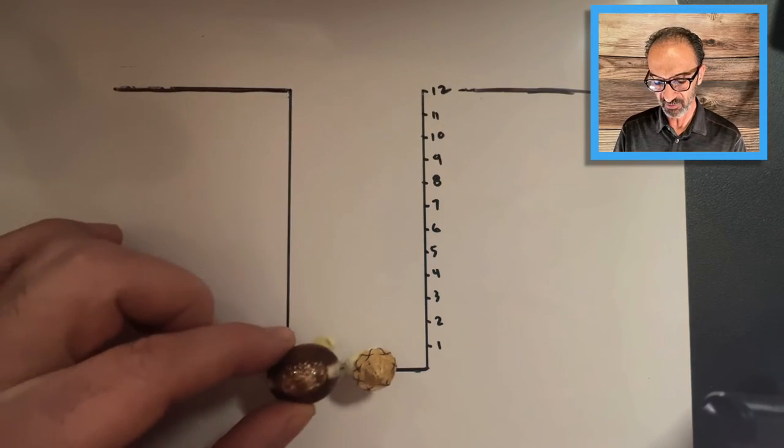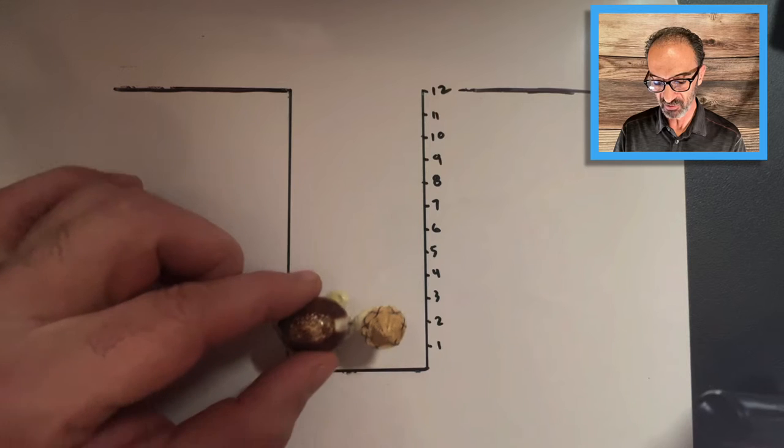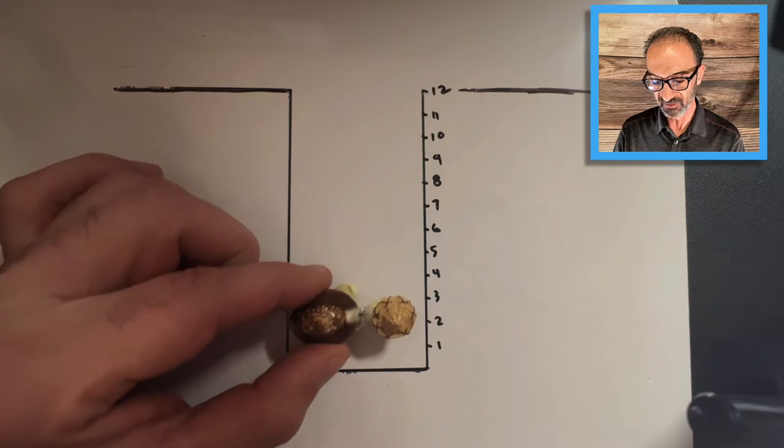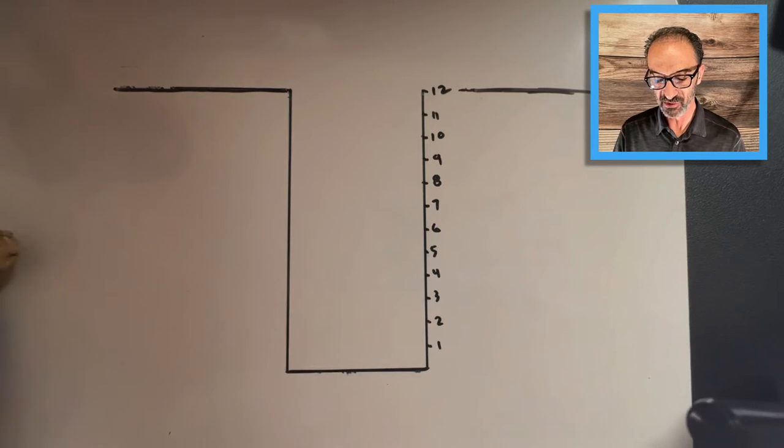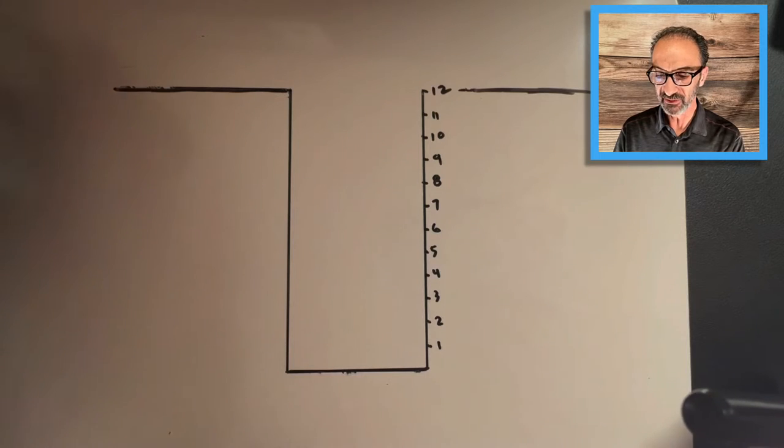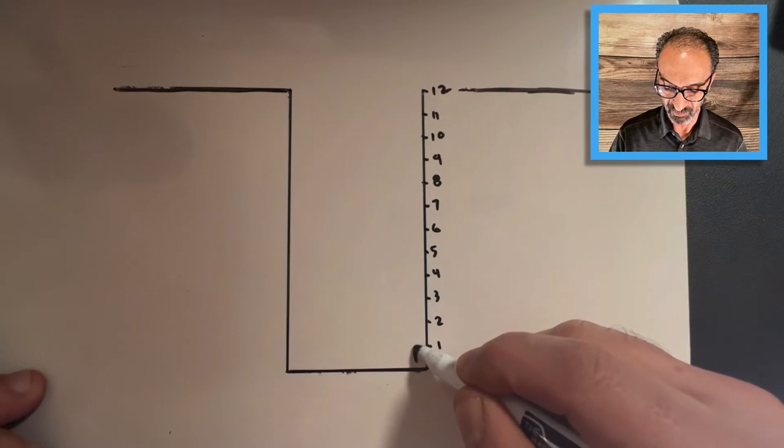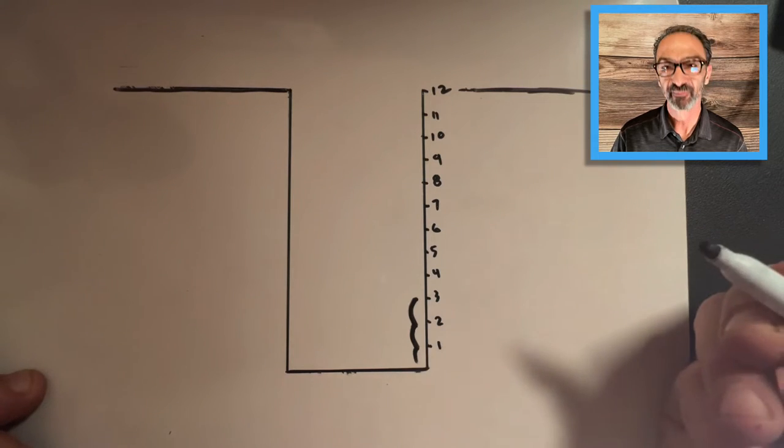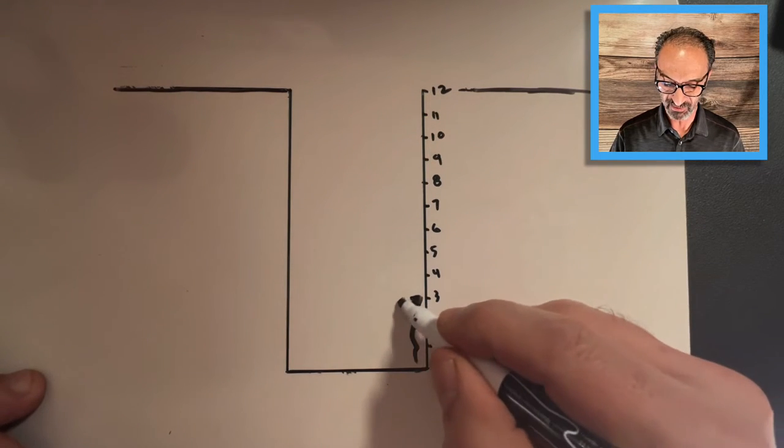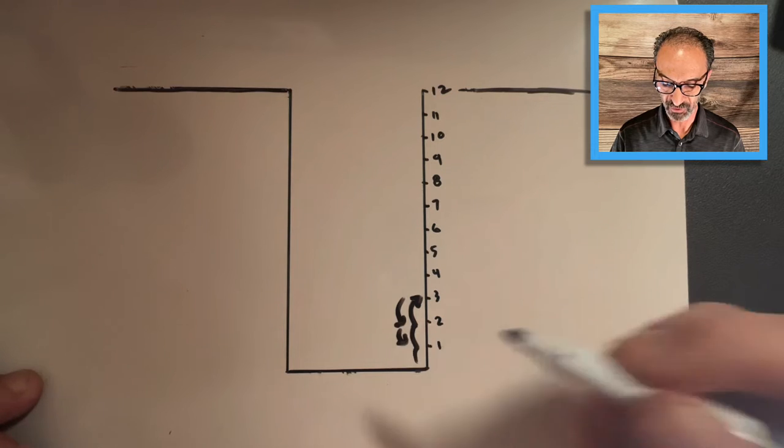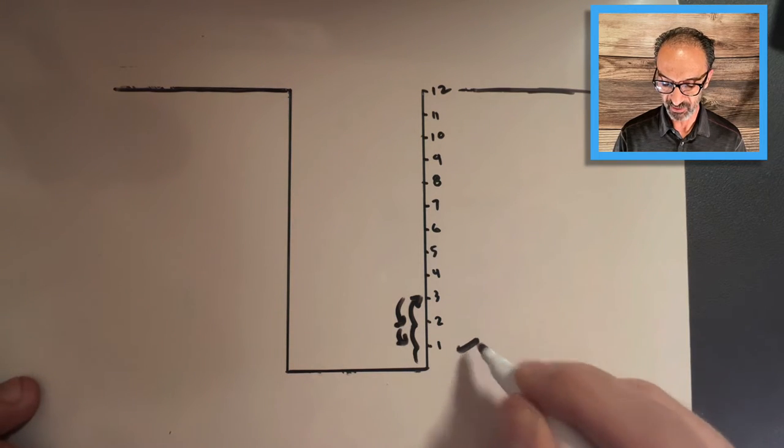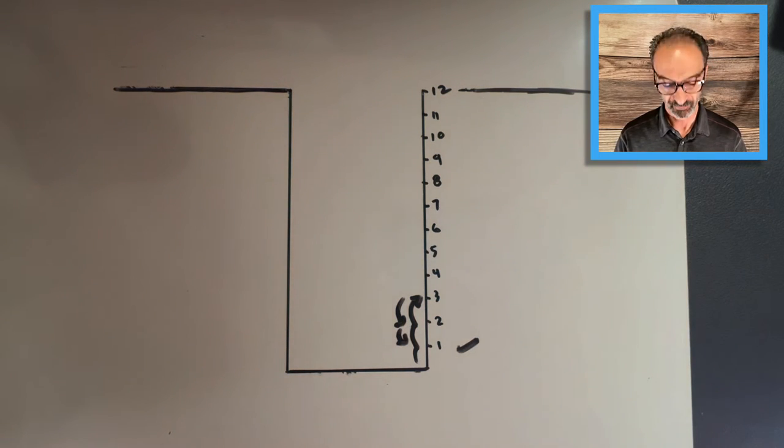The game is simple: daytime it goes up 3, nighttime it goes down 2, and so on. So if I go 1, 2, 3, that's daytime. At night we go down 2, so we are at 1. That's not too hard to follow.